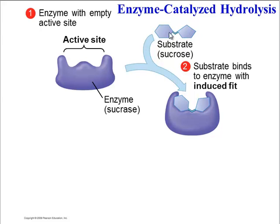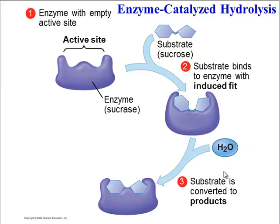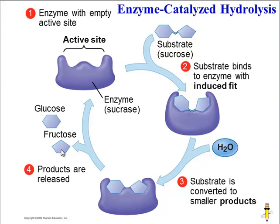Notice what happens here: the substrate, sucrose, binds to the enzyme with a perfect fit. This is called an induced fit, because initially the fit wasn't so perfect, but once it starts to bind, the enzyme changes its shape just a little bit to fit perfectly. Once the enzyme has bound its substrate, it can now catalyze the reaction. In this case, water is going to be added and we're going to split sucrose up into two smaller molecules — glucose and fructose. So here are the products. The important thing to note is that the enzyme is unchanged by the reaction.